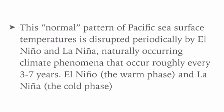El Niño and La Niña are naturally occurring climate phenomena that occur roughly every 3 to 7 years. El Niño ka matlab hota hai 'the warm phase' and La Niña ka matlab hota hai 'the cold phase.' The phenomenon was first recognized by Peruvian fishermen who noticed unusually warm coastal waters. Spanish people gave it the name 'El Niño,' meaning 'the little one.' It is not a regular cycle — aapko pata nahi hota kab hoga — you cannot predict it exactly, but it occurs irregularly within a 2–7 year interval.